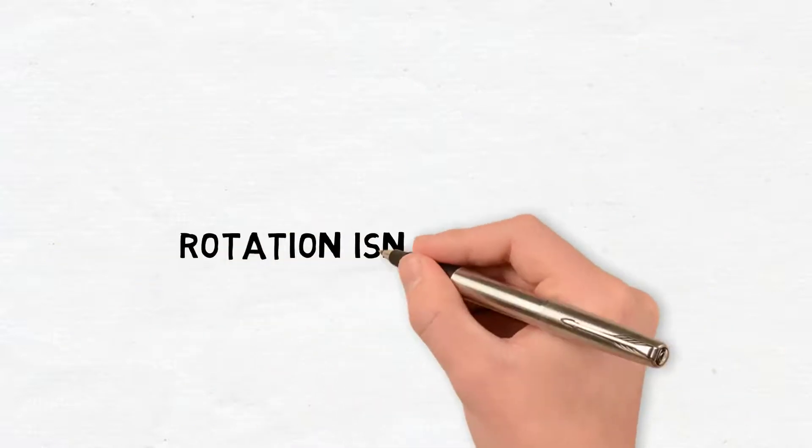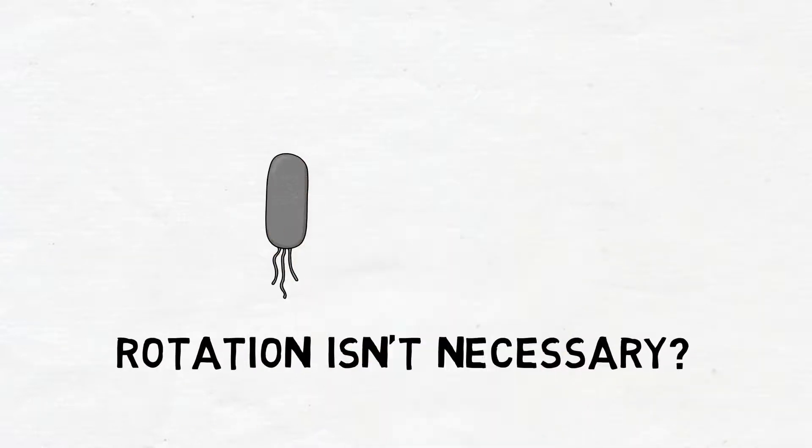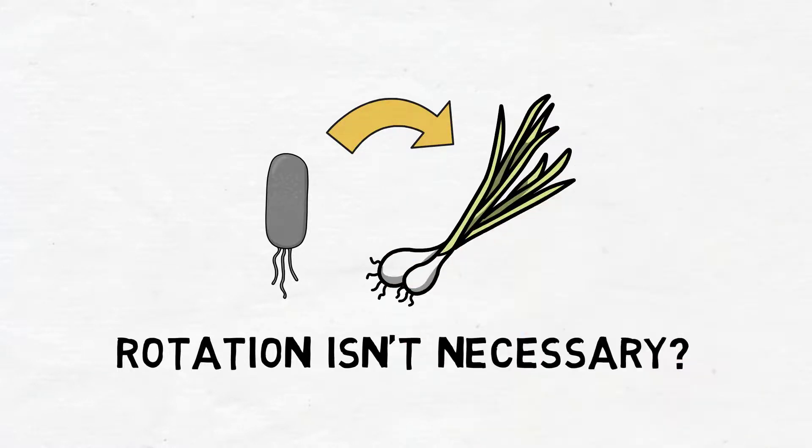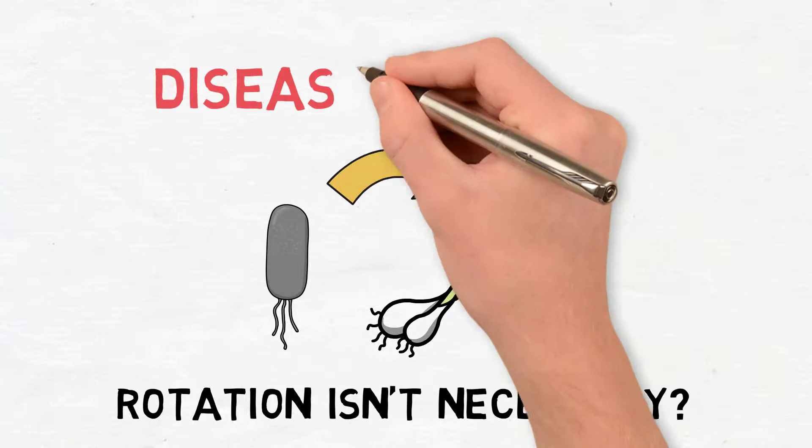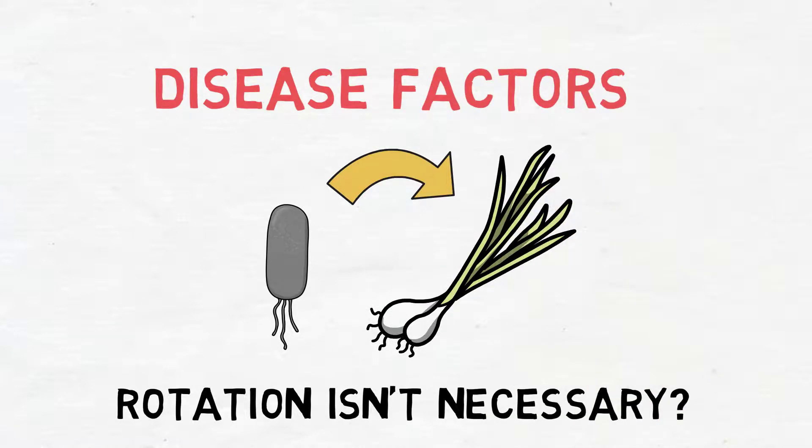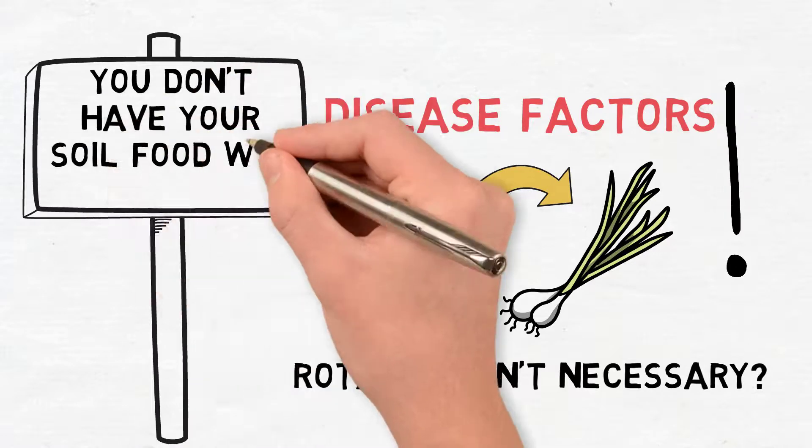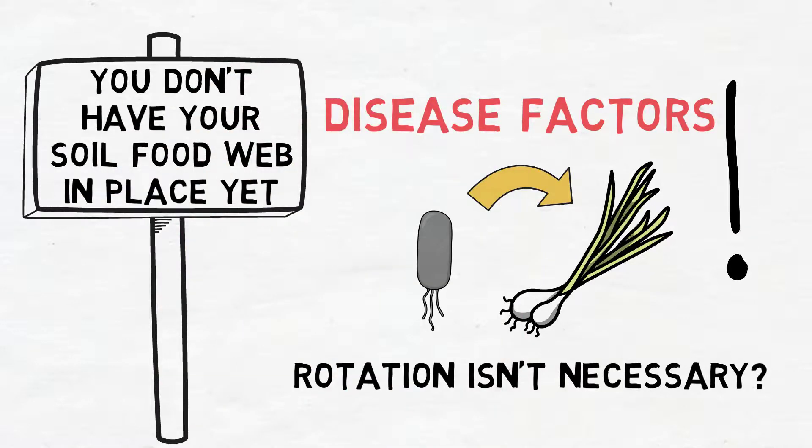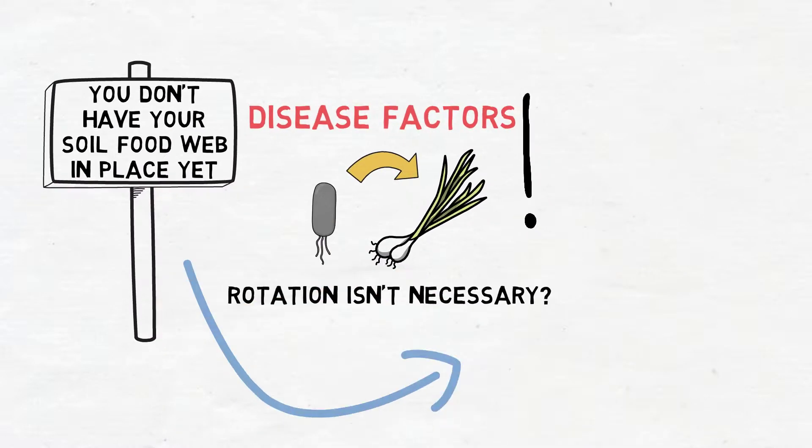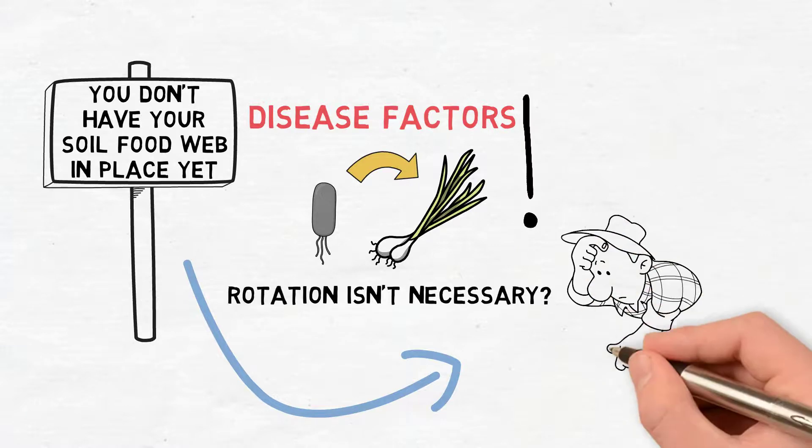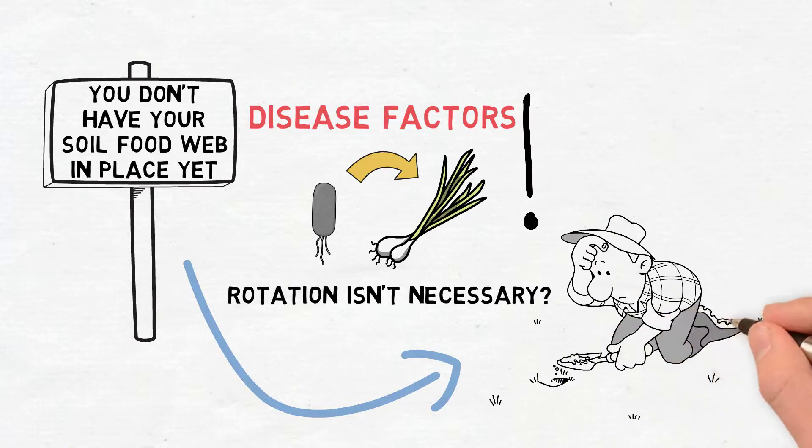And you're saying rotation isn't necessary if you have the right life in your soil appropriate to the crop you're growing? Yep, absolutely no reason. Disease factors is one reason for why you have to rotate. And so if you've got a lot of diseases happening, it's kind of like Mother Nature trying to tell you that you don't have your food web in place yet. You don't have the microorganisms present in your soil. So get busy and fix that so you don't have to do a rotation.